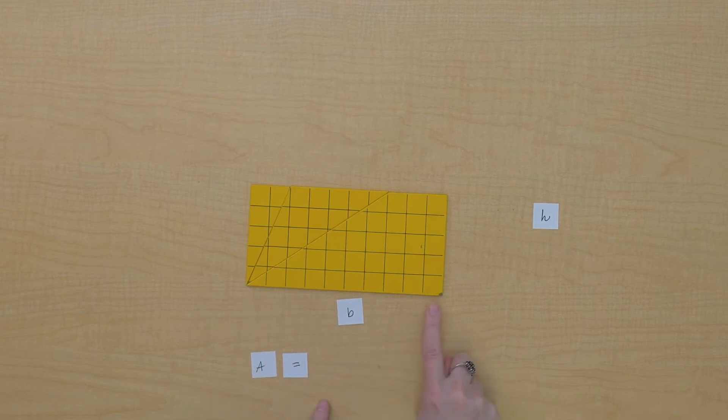The base of this rectangle is the base of that original triangle we had, but the height of this rectangle is not. That triangle went up to here. This is half the height of our triangle.